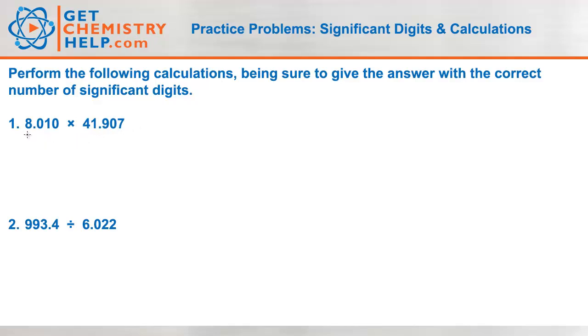The first one says 8.010 times 41.907. I punch that in my calculator and get 335.67507. We learned in our lesson on significant digits and calculations that when you multiply, you're limited to the fewest sig figs present in either of the measurements that goes in. This number here has four significant figures. 41.907 has five significant figures.